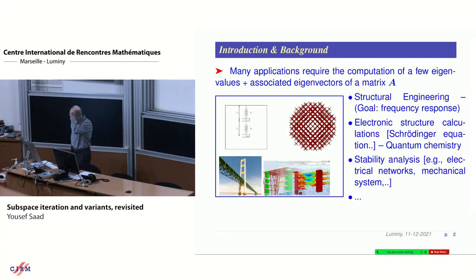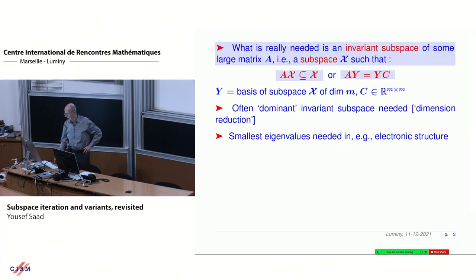The problem we're addressing is, as you've probably seen with subspace iteration, it's applied to eigenvalue problems. You see here a few applications: structural engineering, electronic structure, stability analysis, and so on. All of these applications deal essentially with computing a few eigenvalues on one end of the spectrum, either higher or lower.